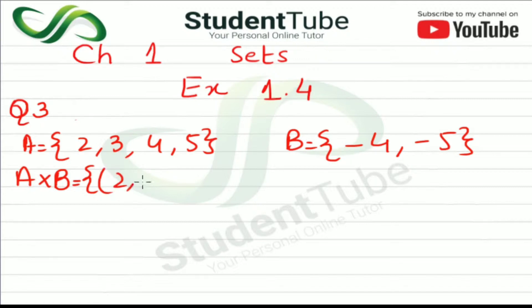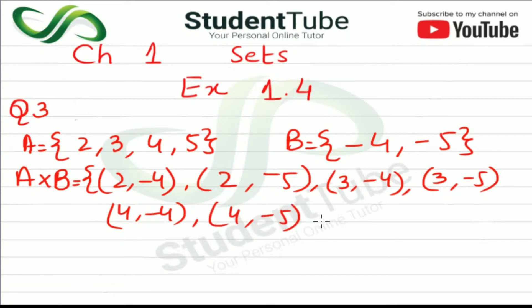So first 2 will come with -5, then 2 will come with -4. Then 3 will come with -5, 3 with -4. Then 4 will come with -5, 4 with -4. Again 5 will come with -5, 5 with -4.